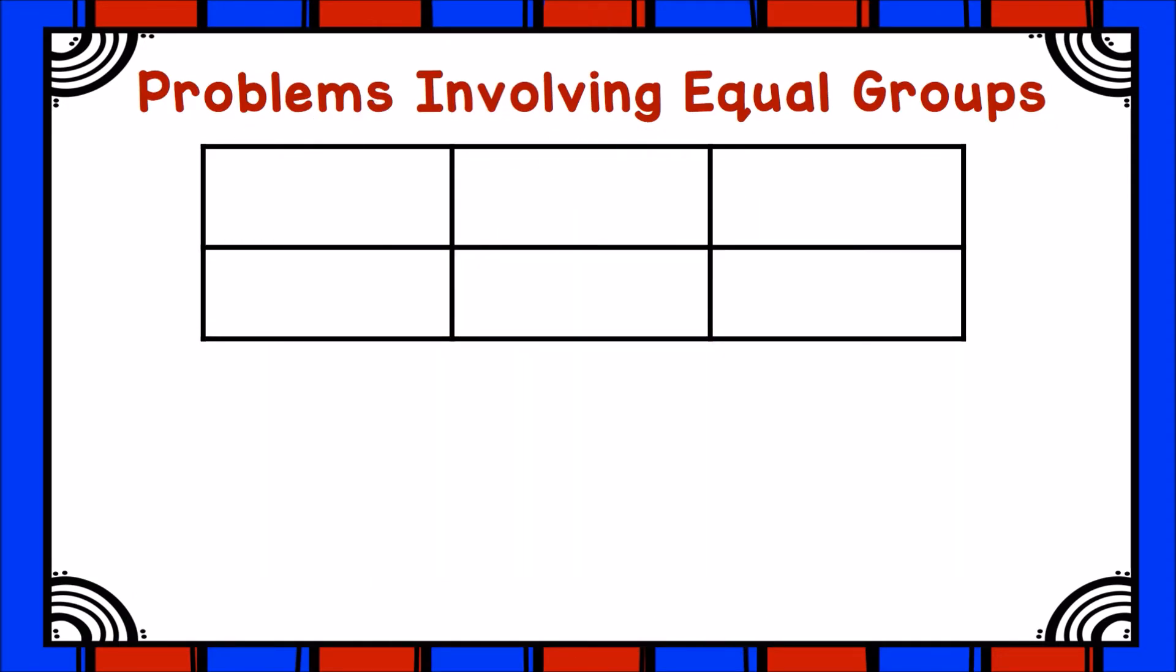When we began exploring equal group problems, the problem told us the number of equal groups and the amount in each group. We just didn't know the total amount. That's what we were solving for. Let's take a look at a sample problem.